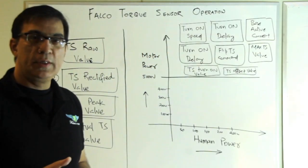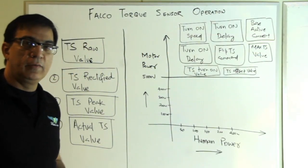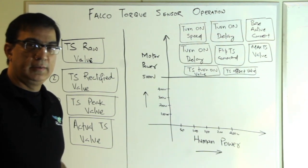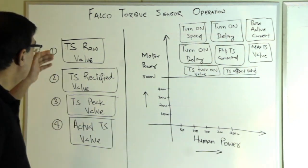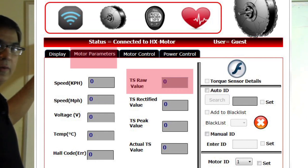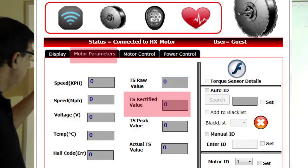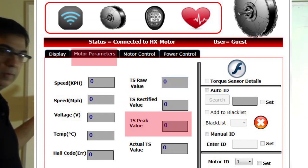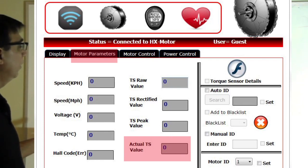The Falco torque sensor operation is characterized by 12 parameters. The 12 parameters are torque sensor raw value, torque sensor rectified value, torque sensor peak value, and actual torque sensor value.